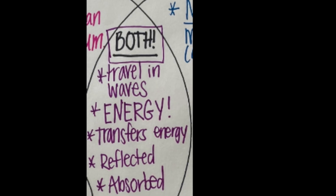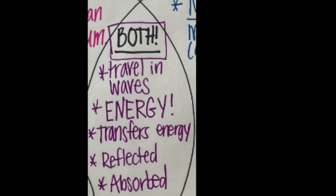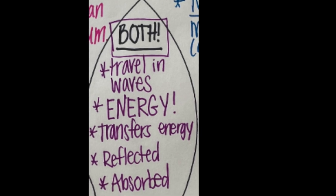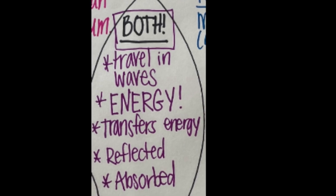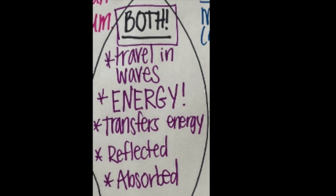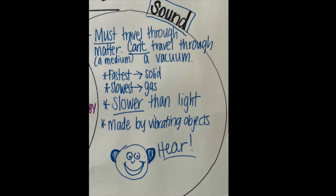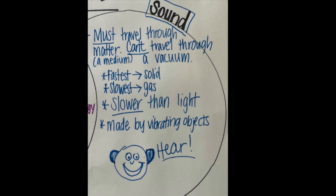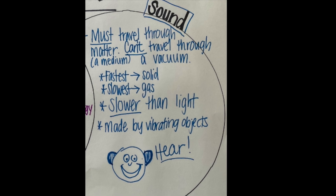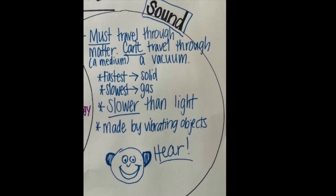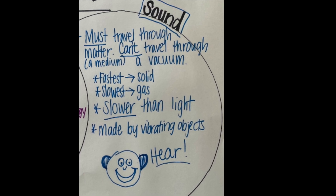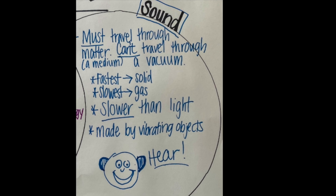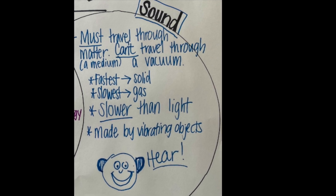Both light and sound travel in waves, they both transfer energy and are forms of energy, and they can both be reflected and absorbed. On the sound side: sound must travel through matter, it can't travel through a vacuum, it requires a medium, it travels fastest through a solid and slowest through a gas, it's slower than light, sound is made by vibrating objects, and we hear sound.